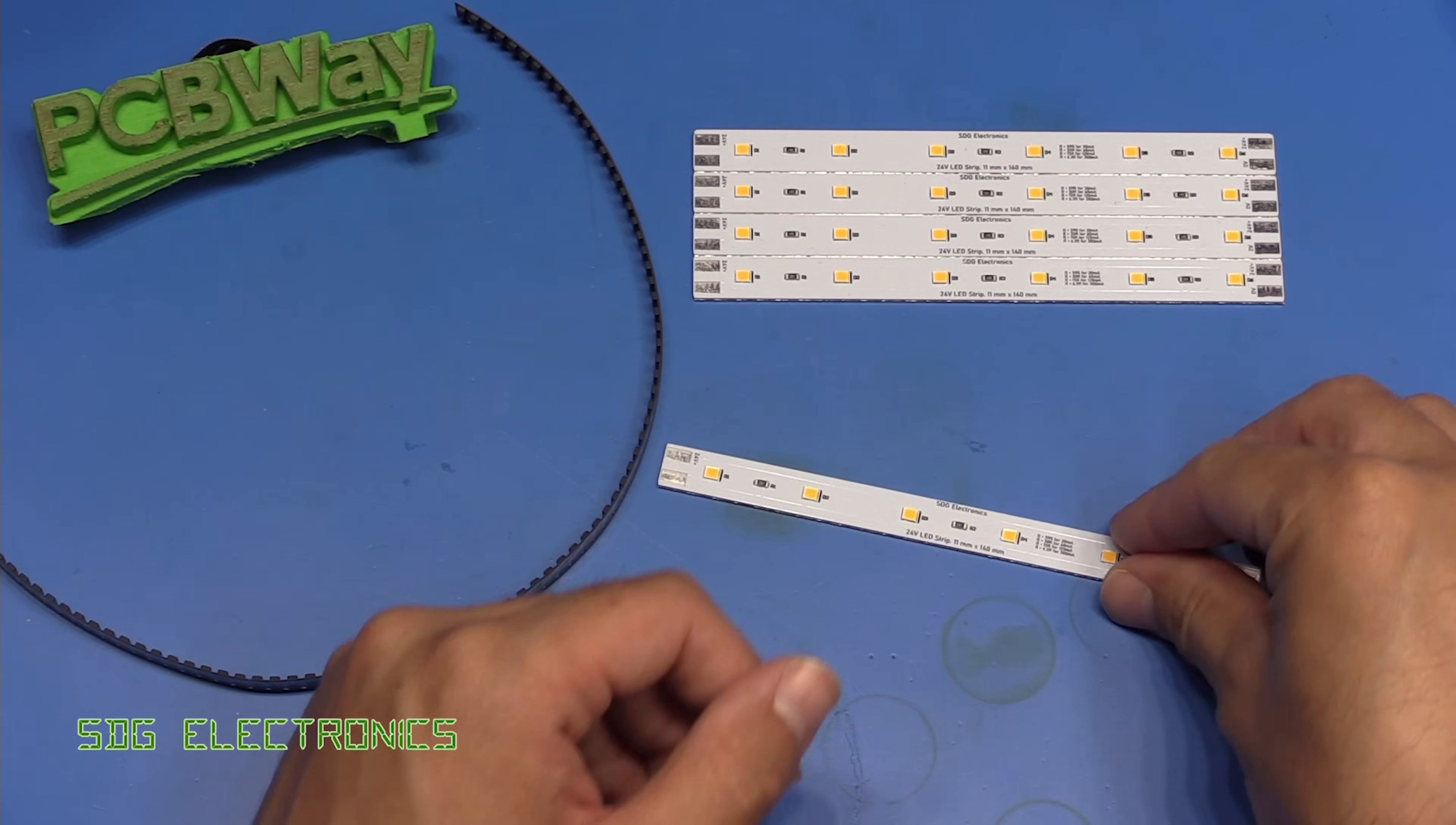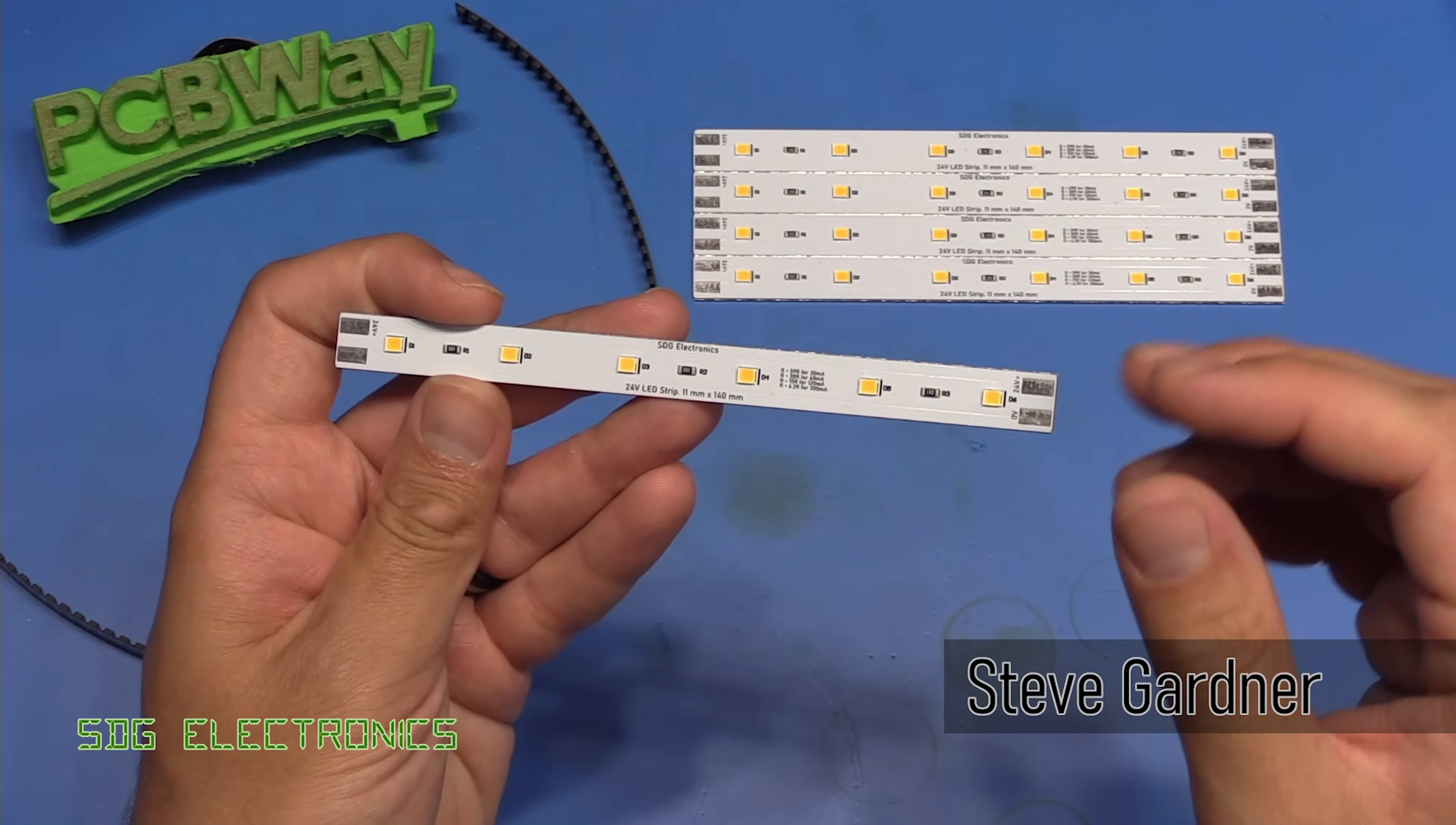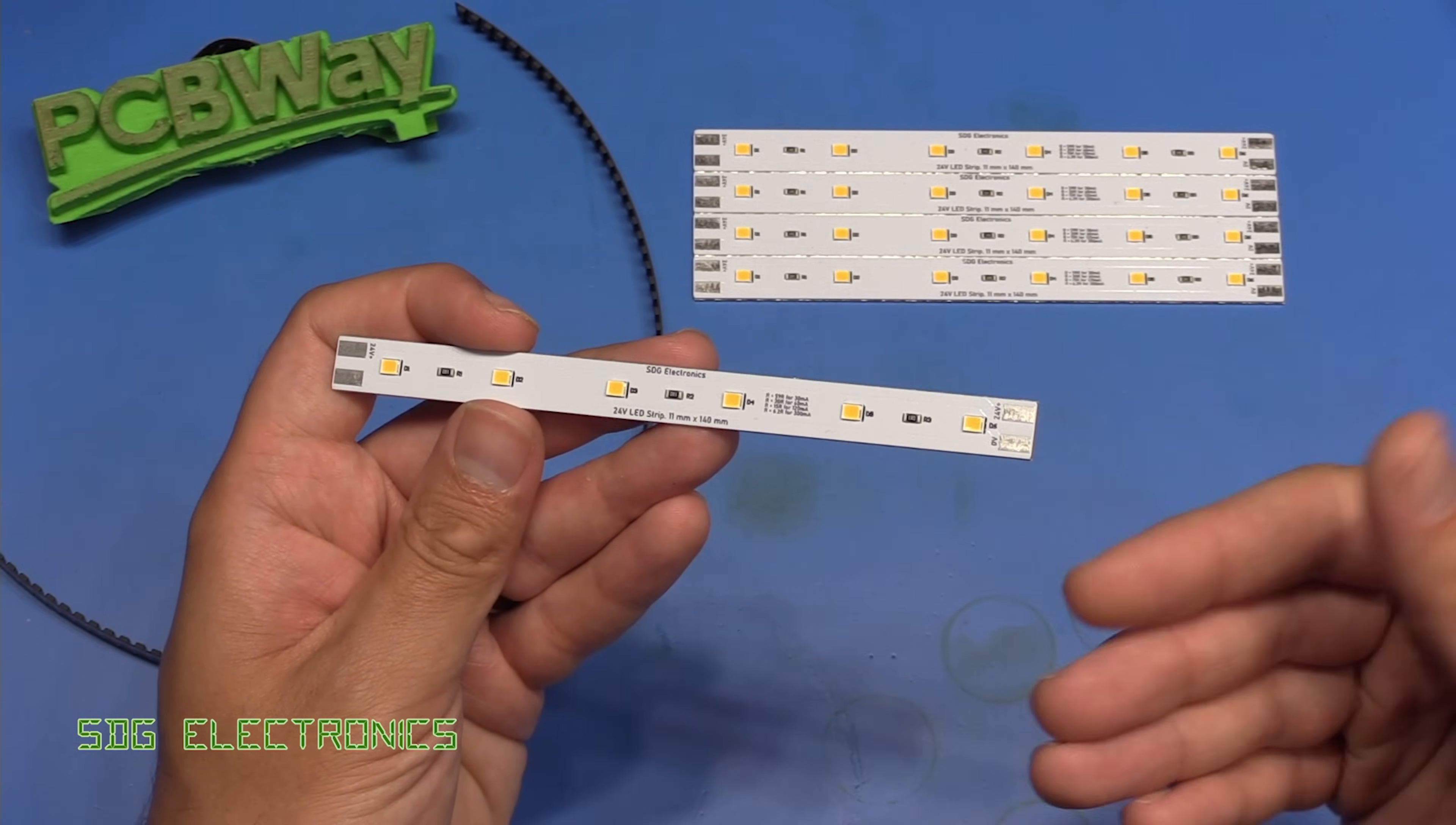Hi. A couple of videos ago we had a look at these aluminium PCBs which we had made at our sponsor for this video, PCBWay. These are some LED strips which are going to be installed in some aluminium profiles that are then going to be installed in this house.